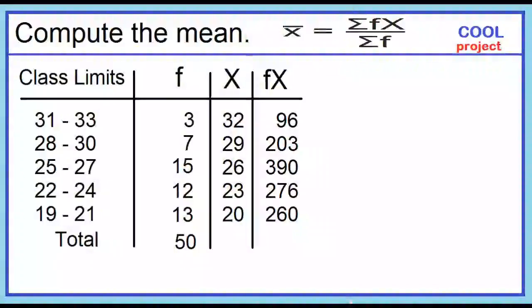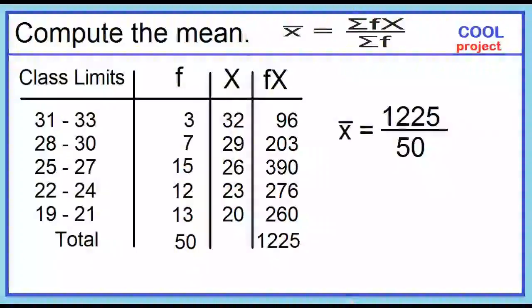Find the sum of the product of the frequency and the class mark. The sum is 1225. Divide the sum by the total frequency. The mean is equal to 1225 over 50, which is equal to 24.5.